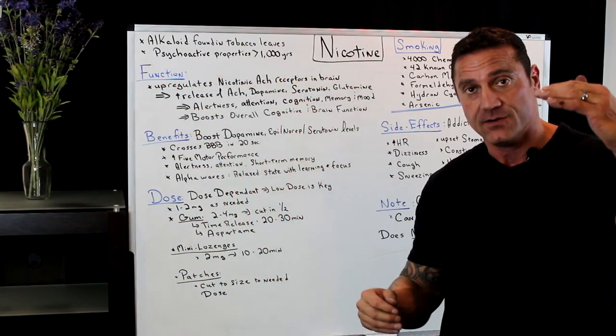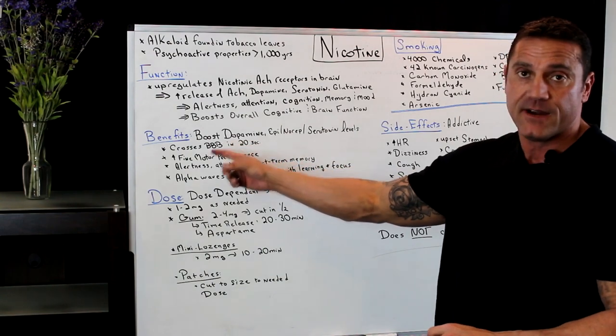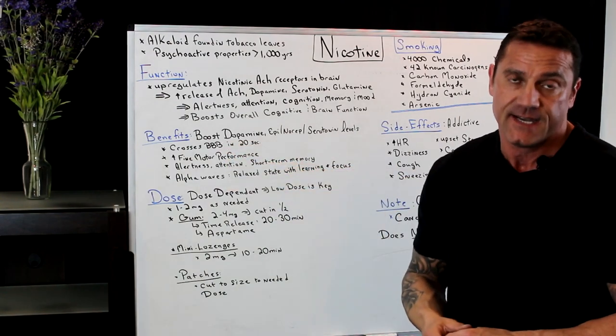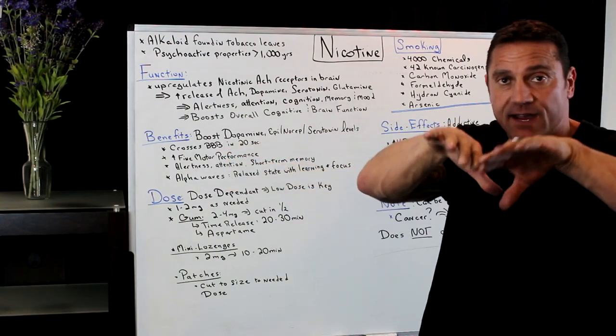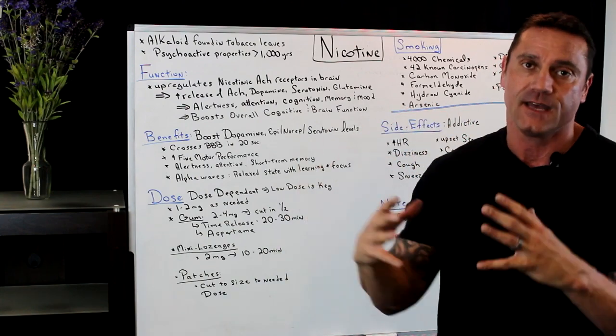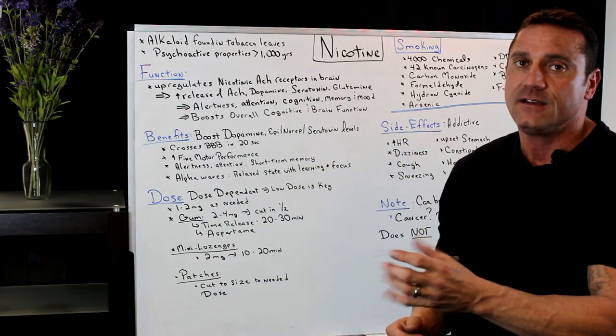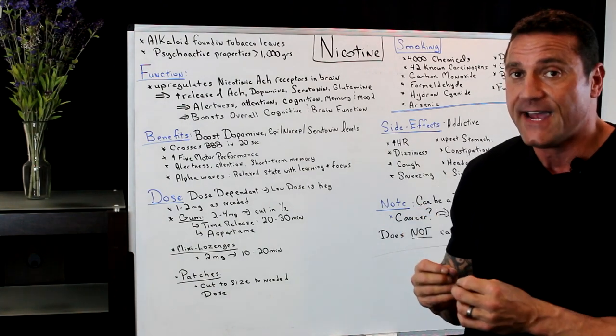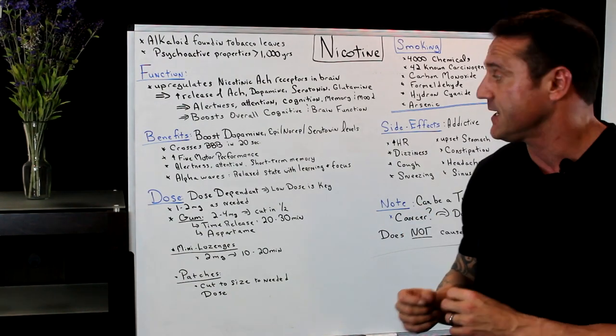It can work as stimulatory or inhibitory. It crosses the blood-brain barrier very, very fast, in about 20 seconds. In our brain, we have like a sheet, like a saran wrap that protects the brain of harmful chemicals. Nicotine, the reason why the stimulatory effects are so fast, because it crosses that in 20 seconds.